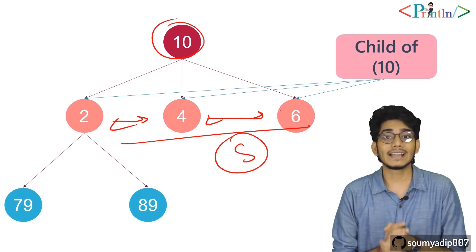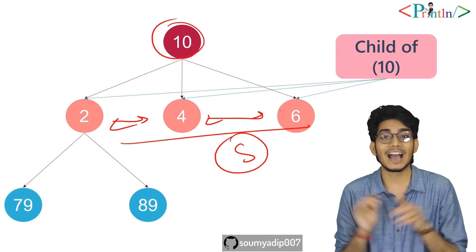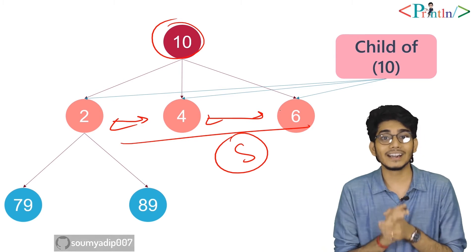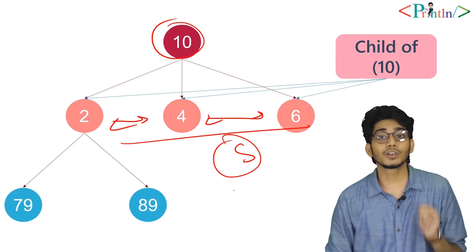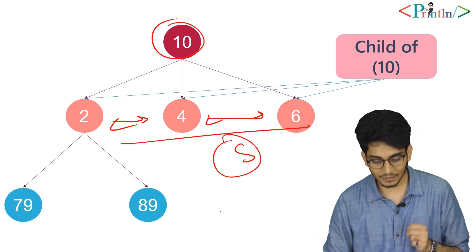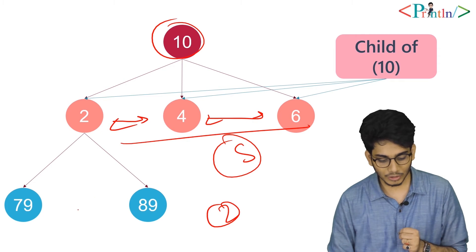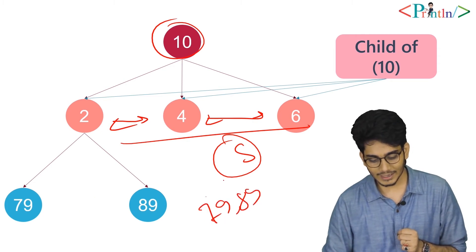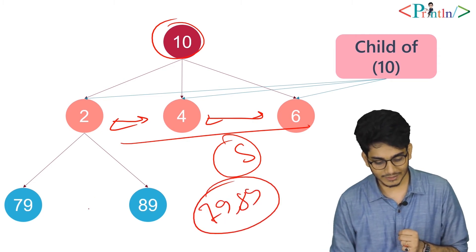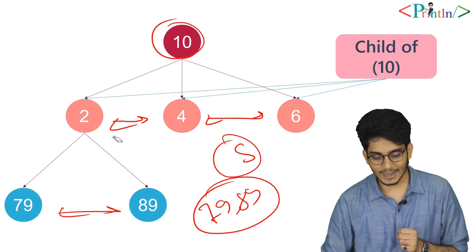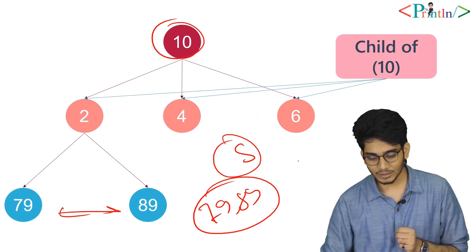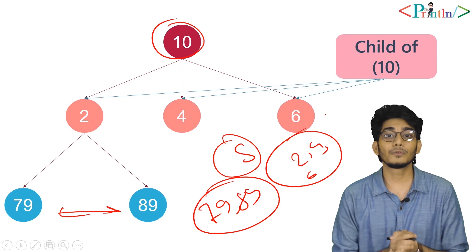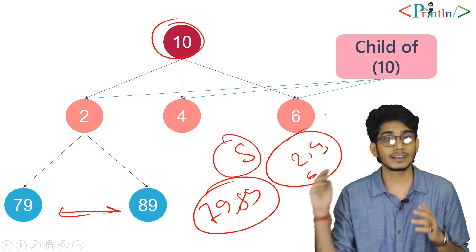How many sets of siblings do we have in this tree? We have two sets of siblings: one set is 79 and 89, and the other set is 2, 4, and 6.